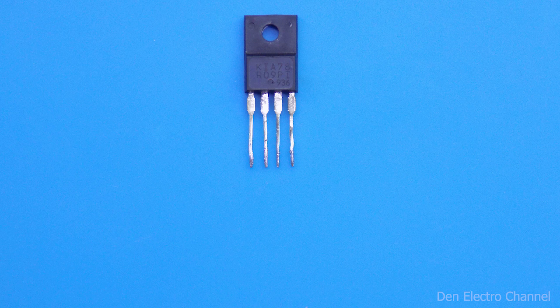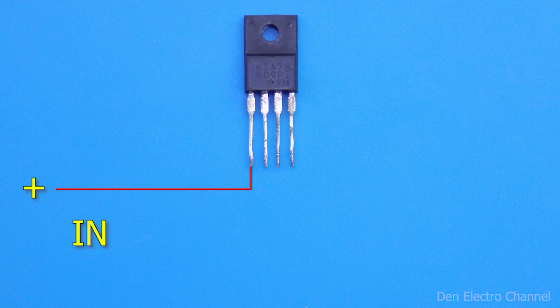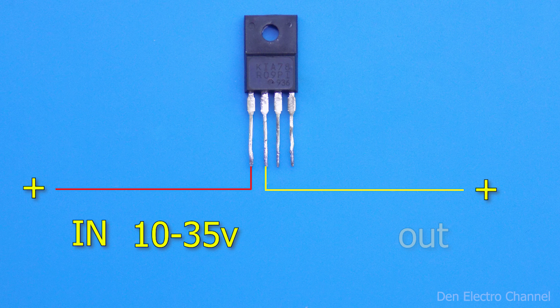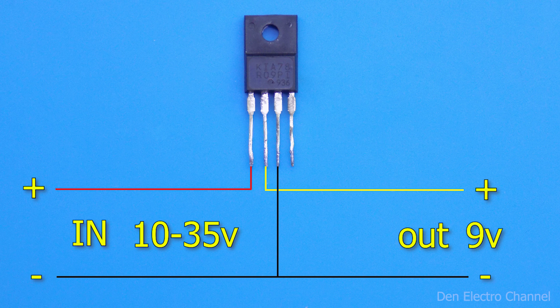A typical microcircuit connection diagram looks like this. The first leg is supplied with a plus input voltage, from 10 to 35 volts. The second leg is the exit. There will be 9 volts here. The third leg is a minus. It is common for both entrance and exit.